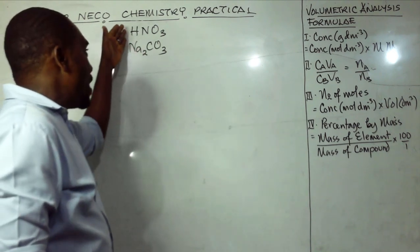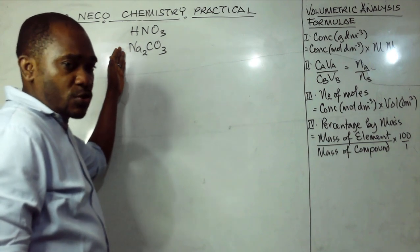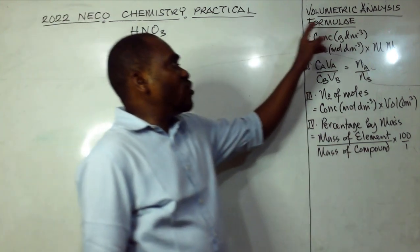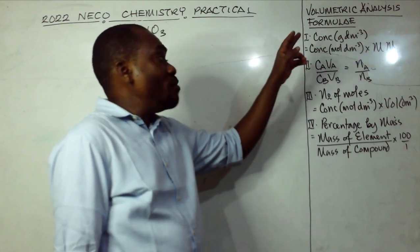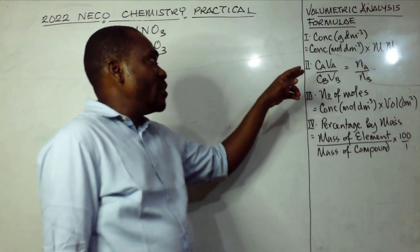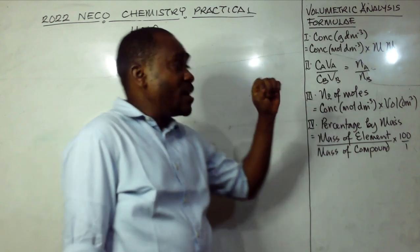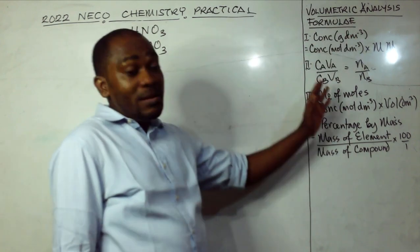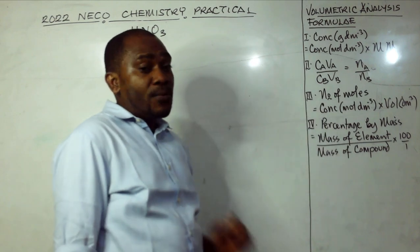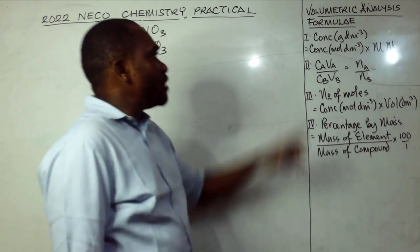Based on the titration between HNO3 and Na2CO3, let's look at the likely formulae we may make use of in this tutorial. These are volumetric analysis formulae — we have four of them — and the minimum we can use in solving any problem in volumetric analysis is two.